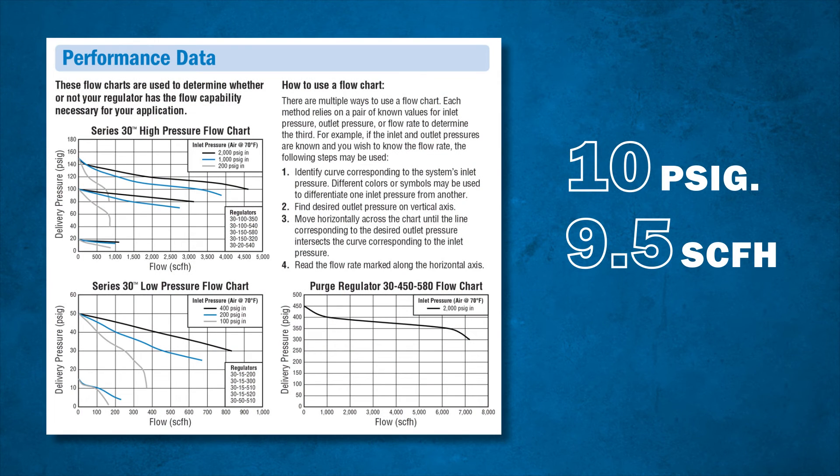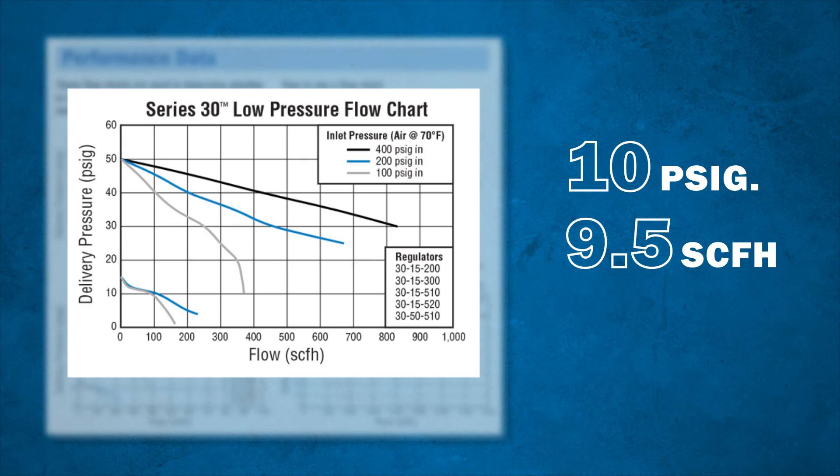You will want to find the required delivery pressure on the vertical axis of your flow chart, then move horizontally across the chart until the line corresponding to the required delivery pressure intersects the curve corresponding to the inlet pressure. You will see that this fuel regulator will provide about 100 SCFH at the required delivery pressure. The flow for your regulator must meet or exceed the consumption of your tip. In this example, 100 SCFH provides more than enough flow for the application.